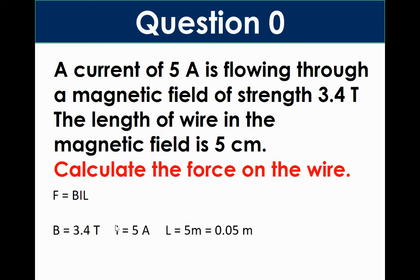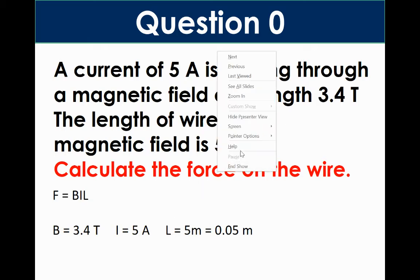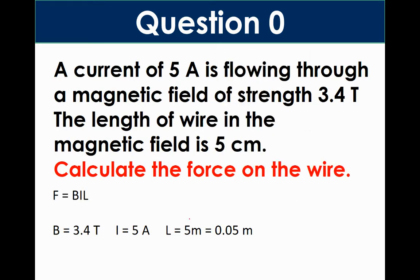You then write down the information you know. So here the magnetic field strength is 3.4 Tesla. The current is 5 amps and the length is 5 centimeters, which is 0.05 meters. So you must always convert to meters. Now we can plug in the numbers in our equation and we get around 0.85 newtons.